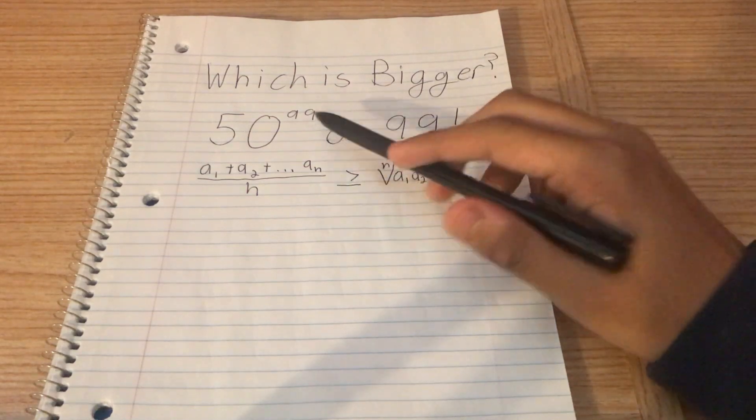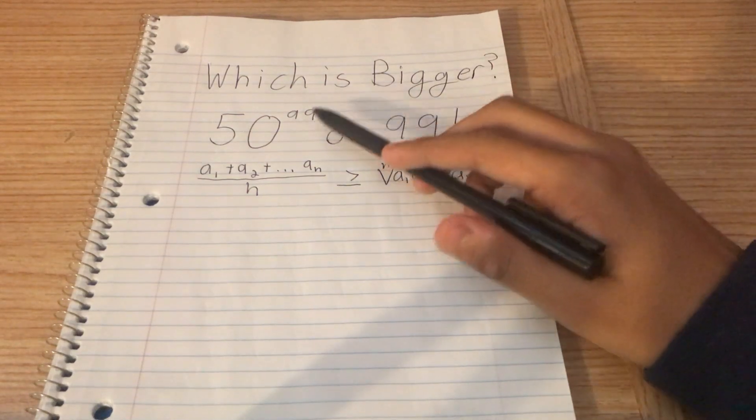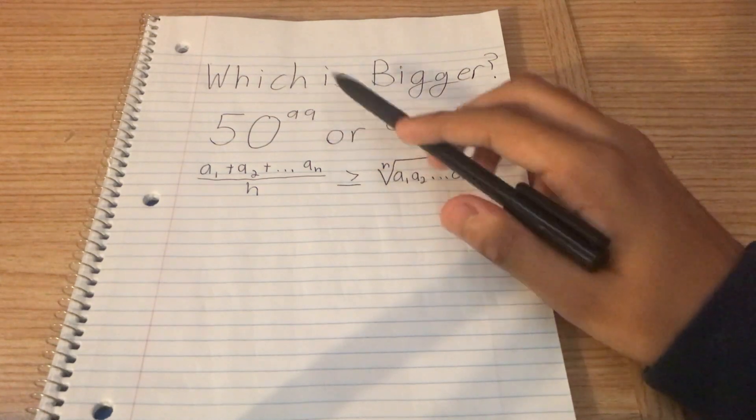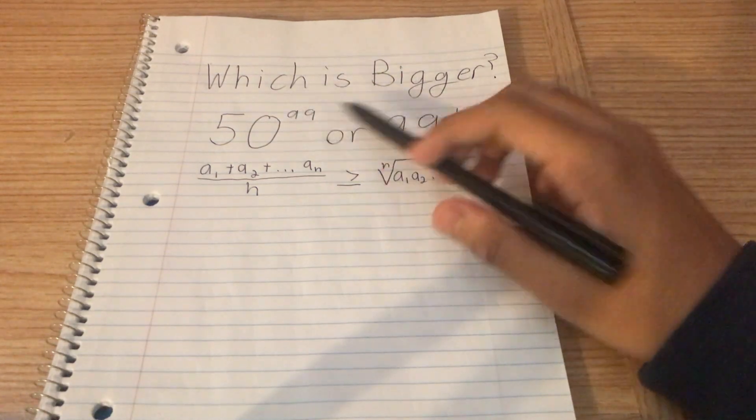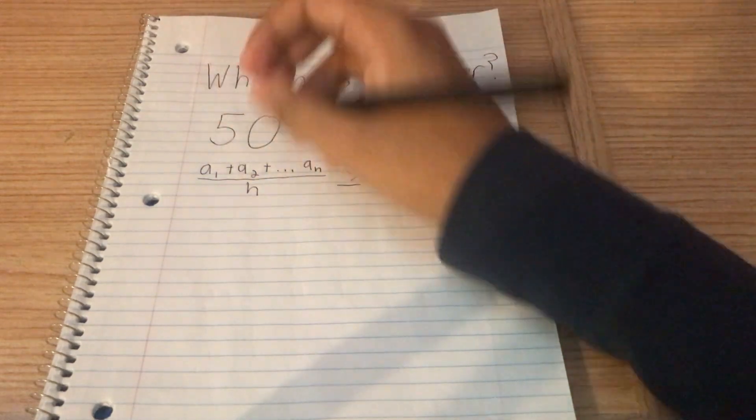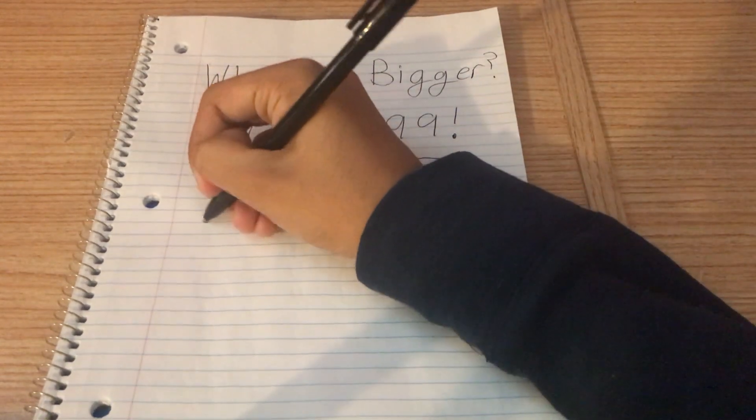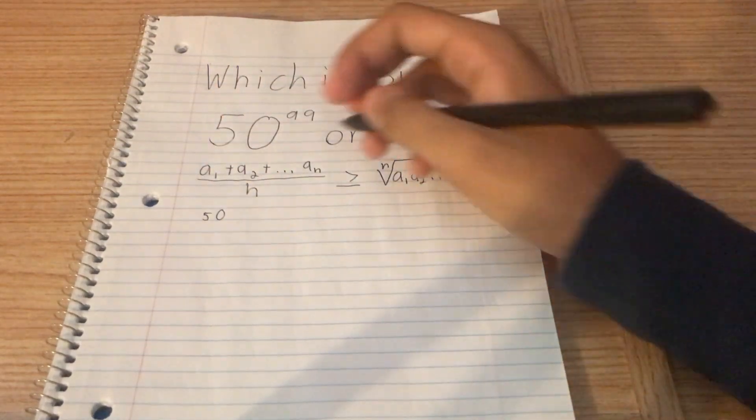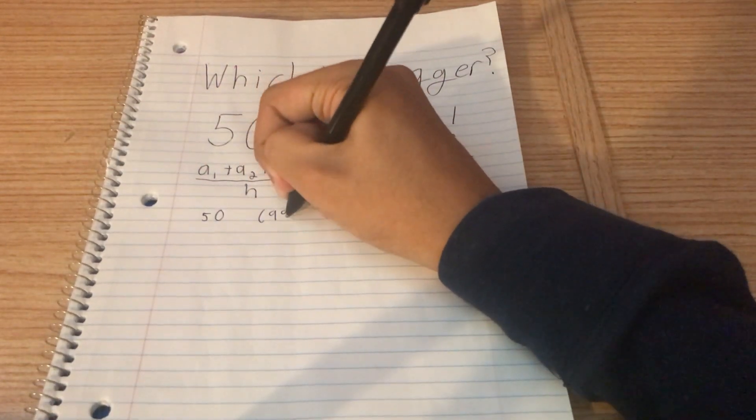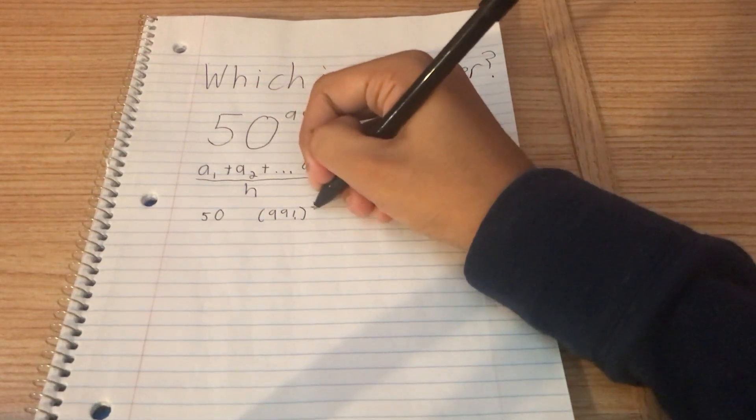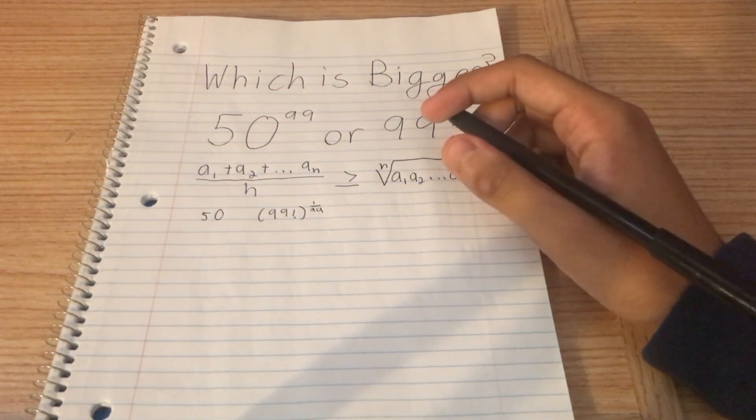So how do we use this over here? Well, first, let's do this. Let's take the 99th root of both values. Because after that, you get 50 to the power of 99 times 1 over 99, so just 50. And for 99 factorial, you just get 99 factorial to the power of 1 divided by 99. Like that.